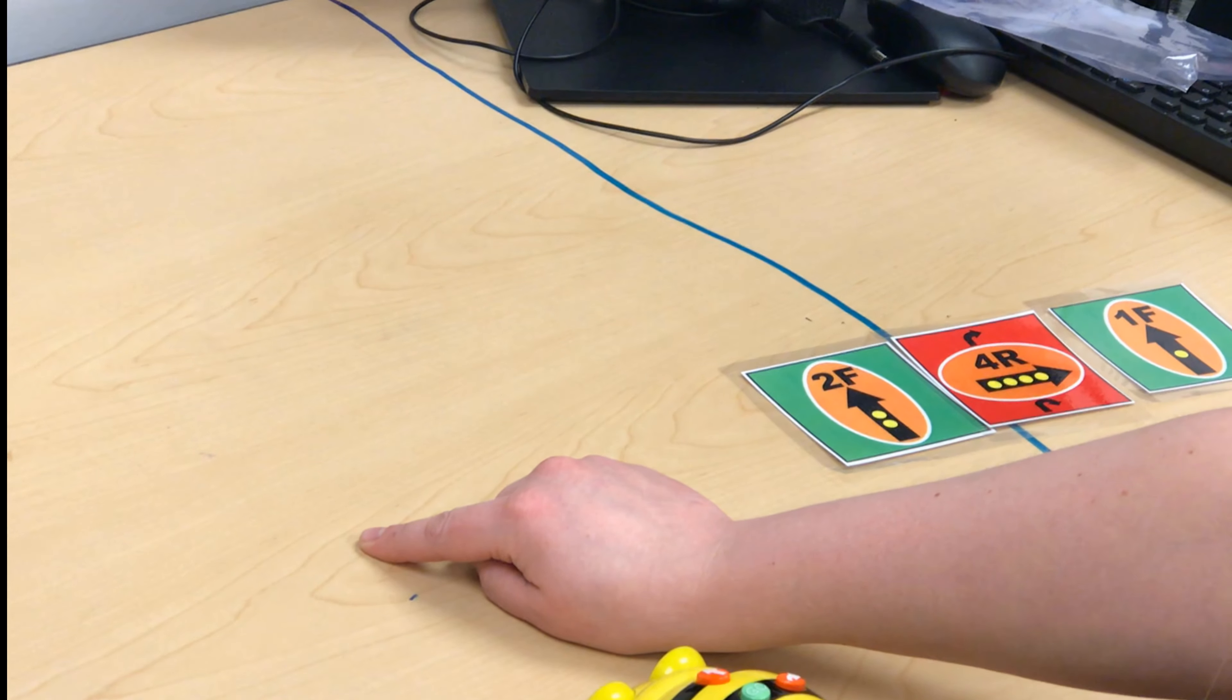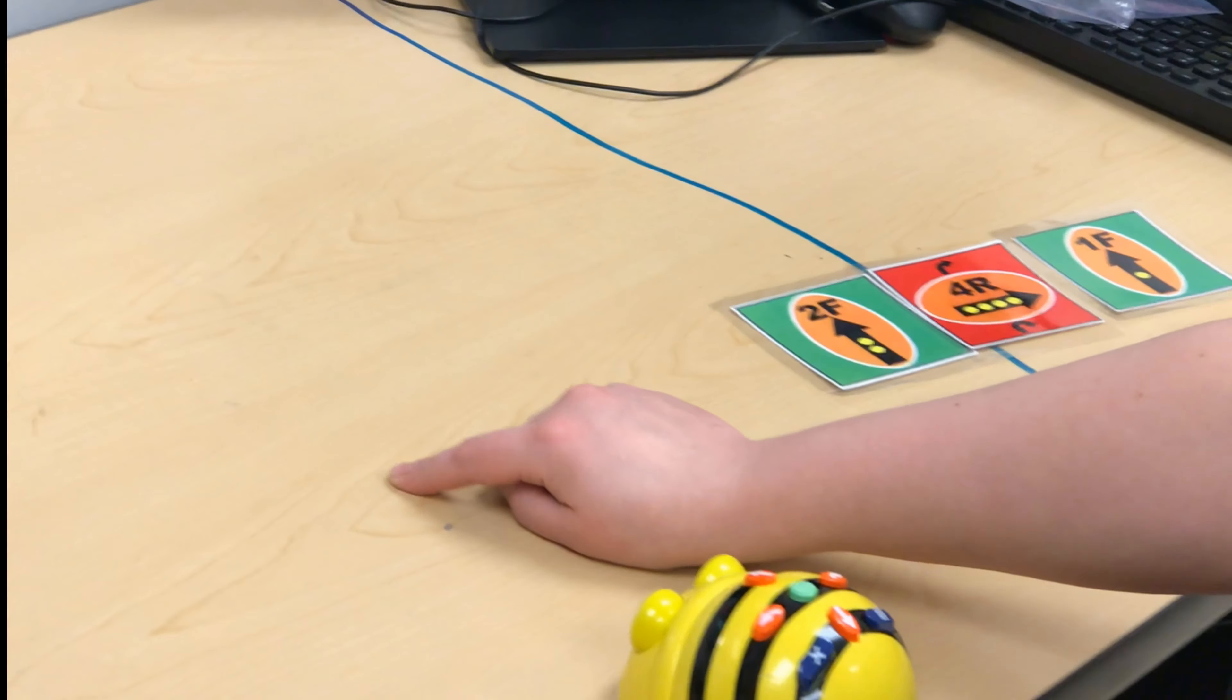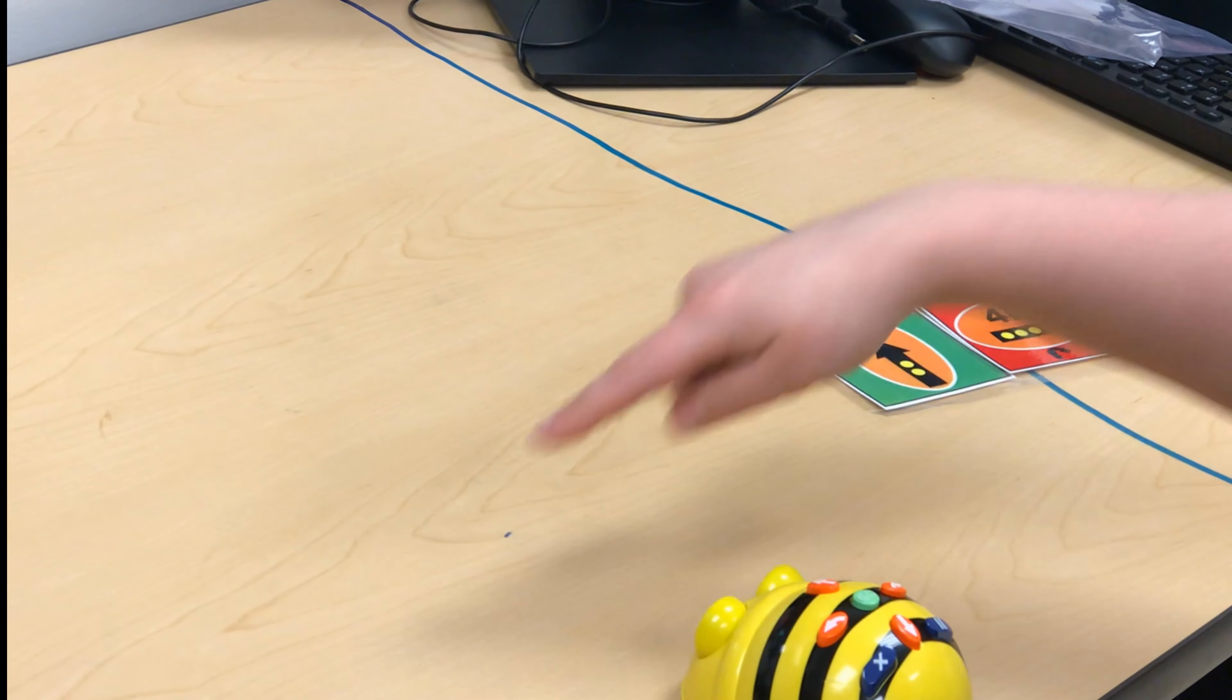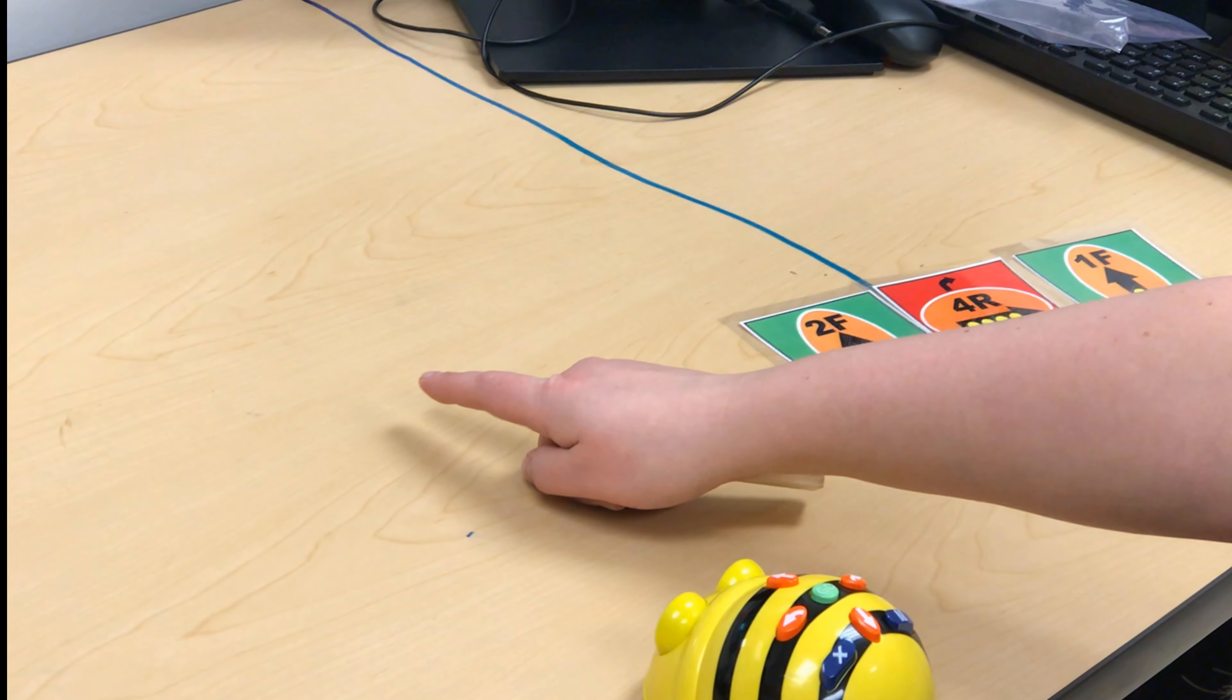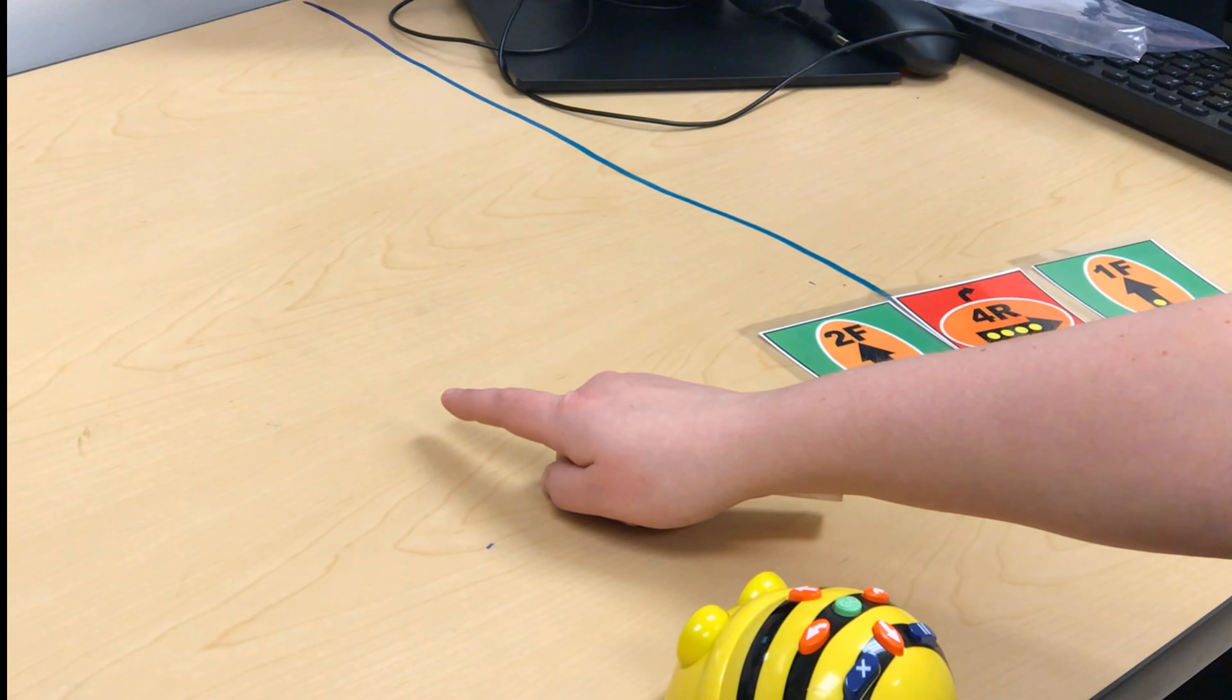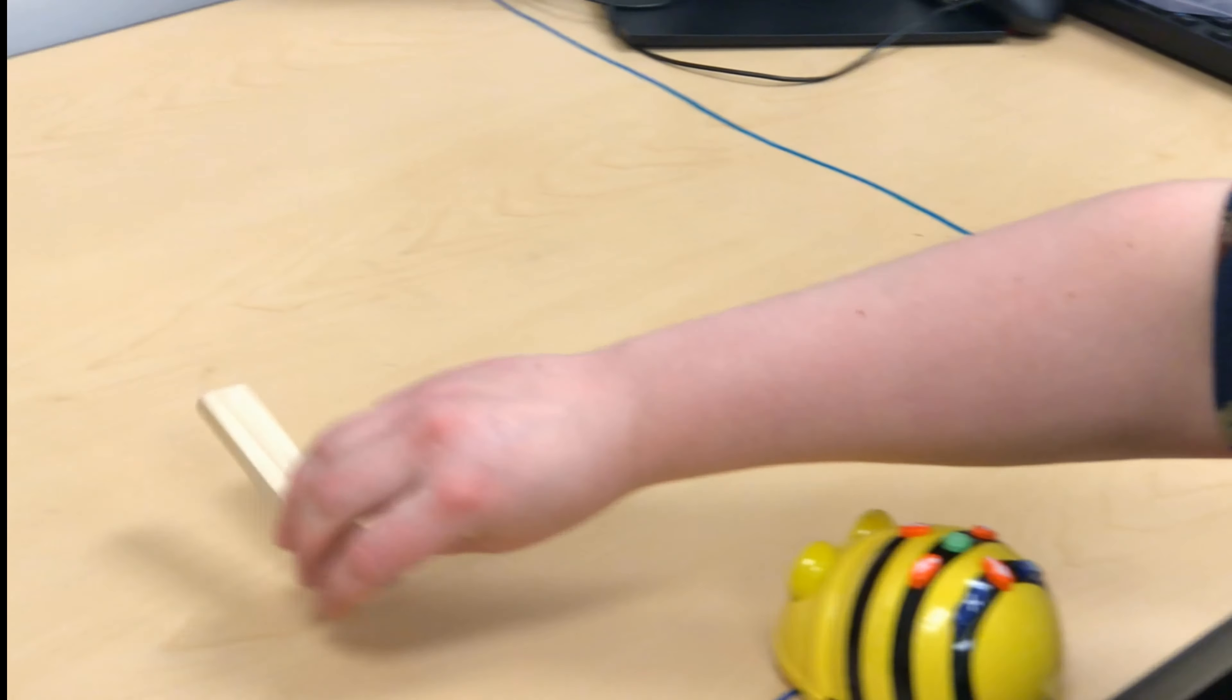It says I need to go right four times. Let's see. One, two, three, four. I'm going to say that my Bee-Bot will stop right here.